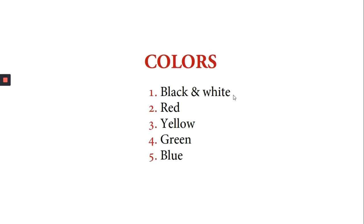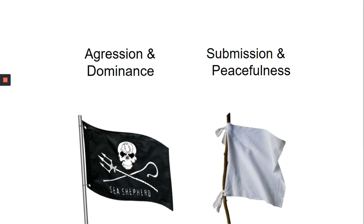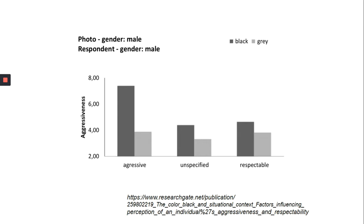Now I'll talk about the different basic colors: black and white, red, yellow, green and blue. Black has a very strong association with aggression and dominance, while white has a strong association with submissiveness, peacefulness and honesty. Since we do most of our activities during the daytime, we perceive darkness as danger. A group of researchers studied the relationship between the color black and aggression and found that men wearing black are perceived as more aggressive than men wearing grey, and to a certain extent more respectable than men wearing grey.